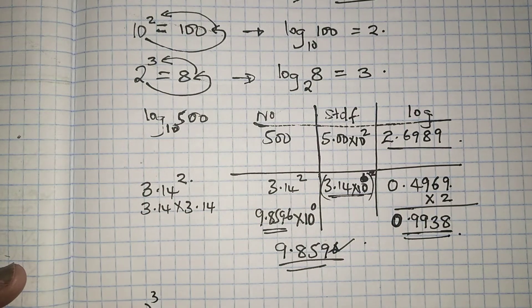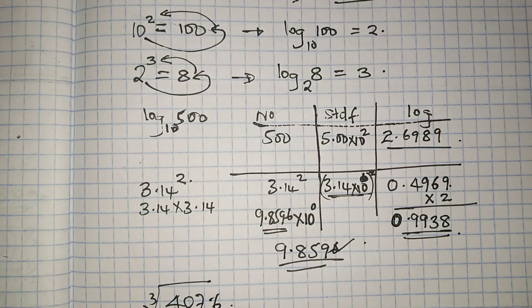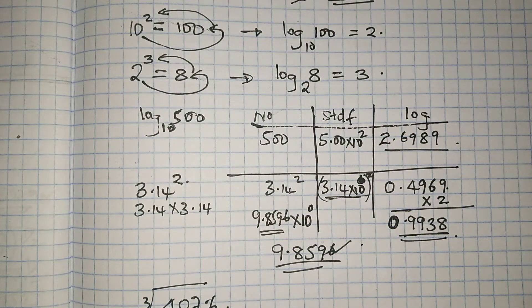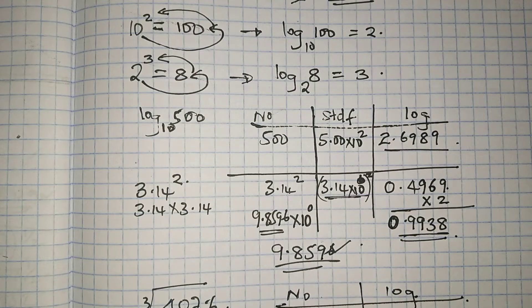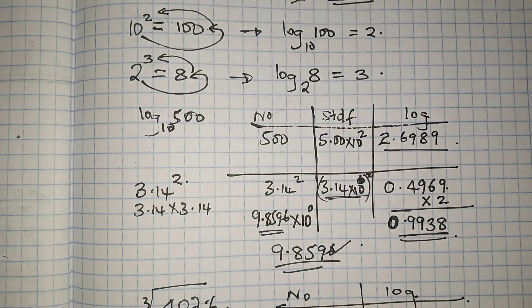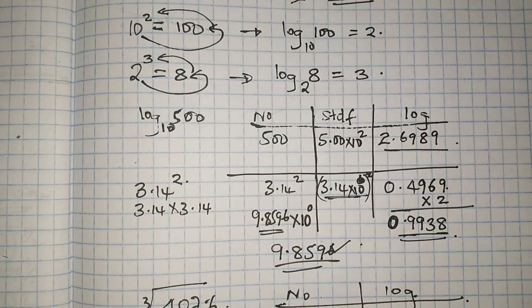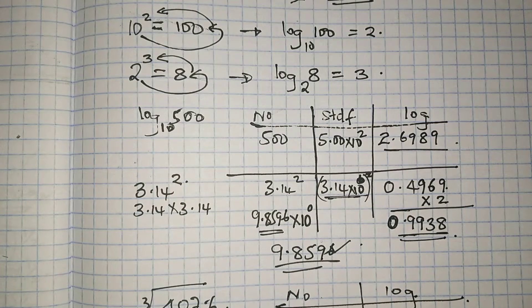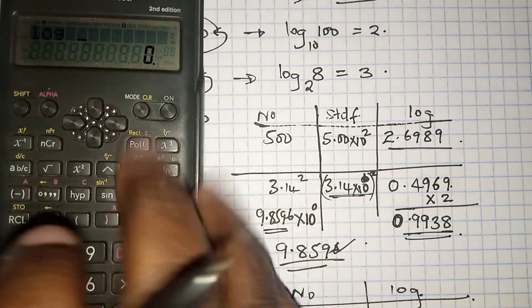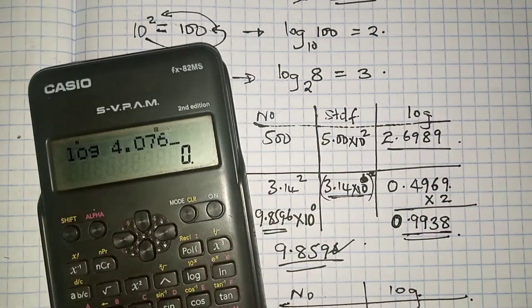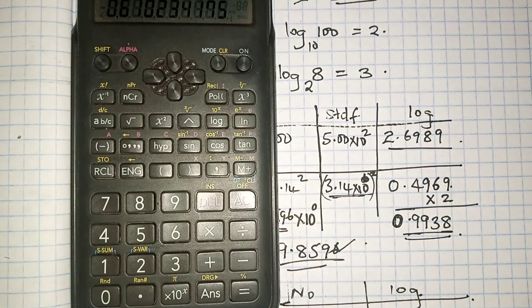The next question is: use logarithms to evaluate the cube root of 407.6. We have to write the number in standard form. The number 407.6 is written as 4.076 times 10 raised to power 2, so the characteristic is 2. We then get the logarithm of 4.076, which is 0.6102.